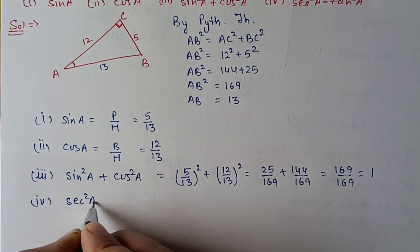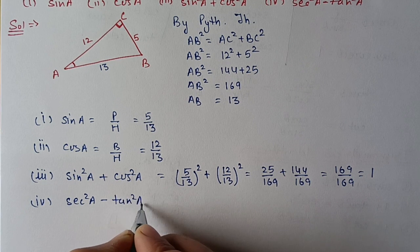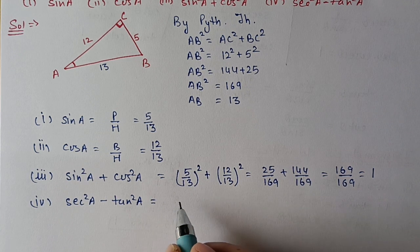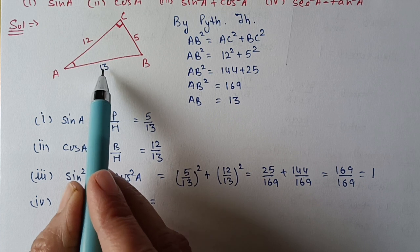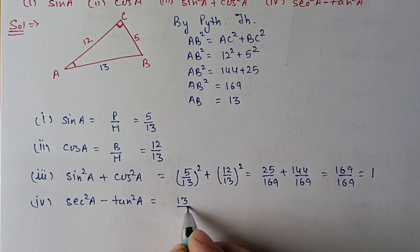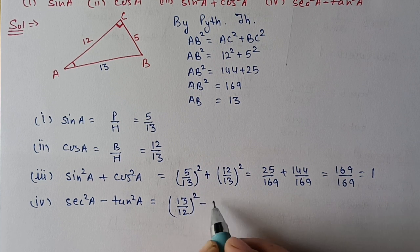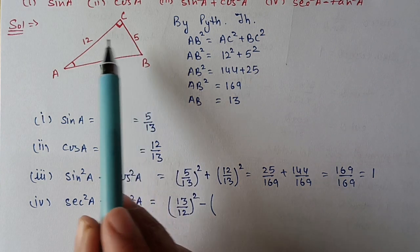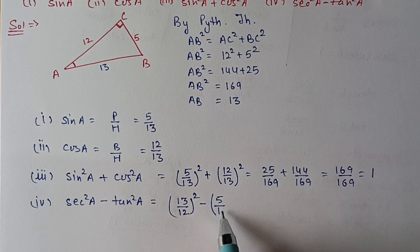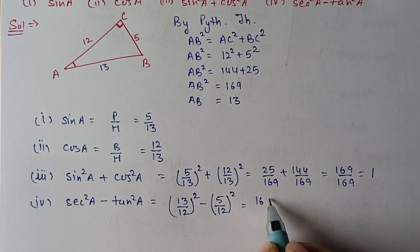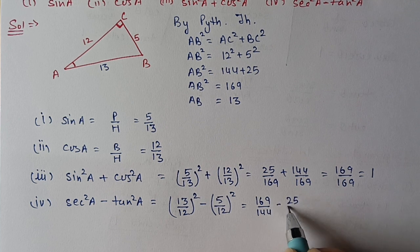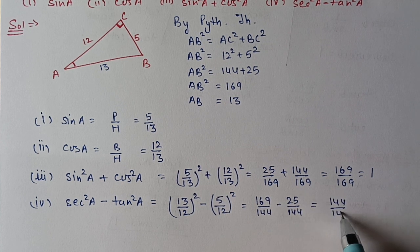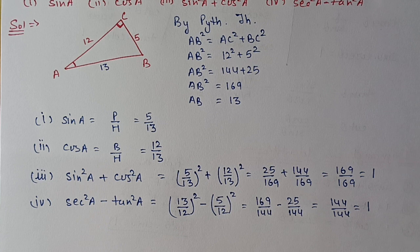Fourth part: find sec²A − tan²A. Sec A = hypotenuse/base = 13/12, and tan A = perpendicular/base = 5/12. So sec²A − tan²A = (13/12)² − (5/12)² = 169/144 − 25/144 = 144/144 = 1.